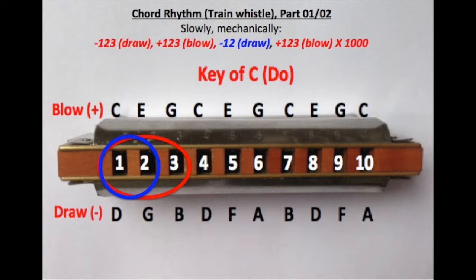What you can see there is holes one, two, and three on the harmonica. That's going to be pulled. It sounds like this. Just play those and suck it in and then blow out, and then do that a couple times.